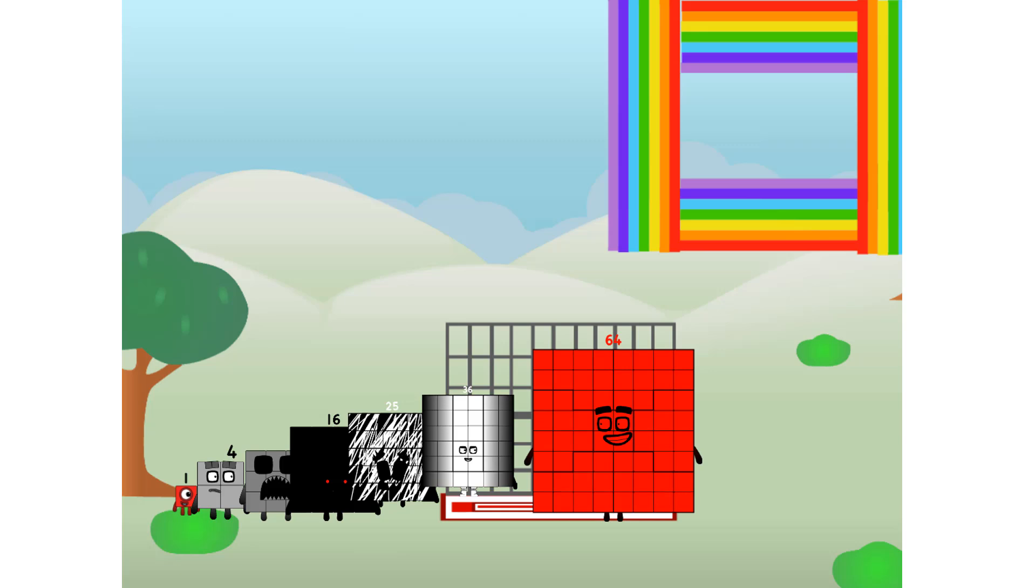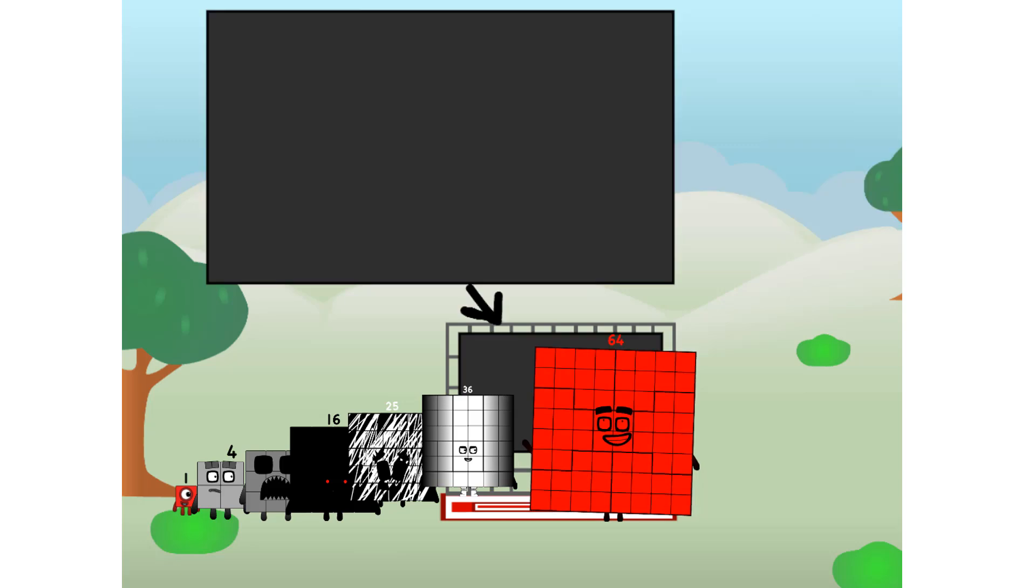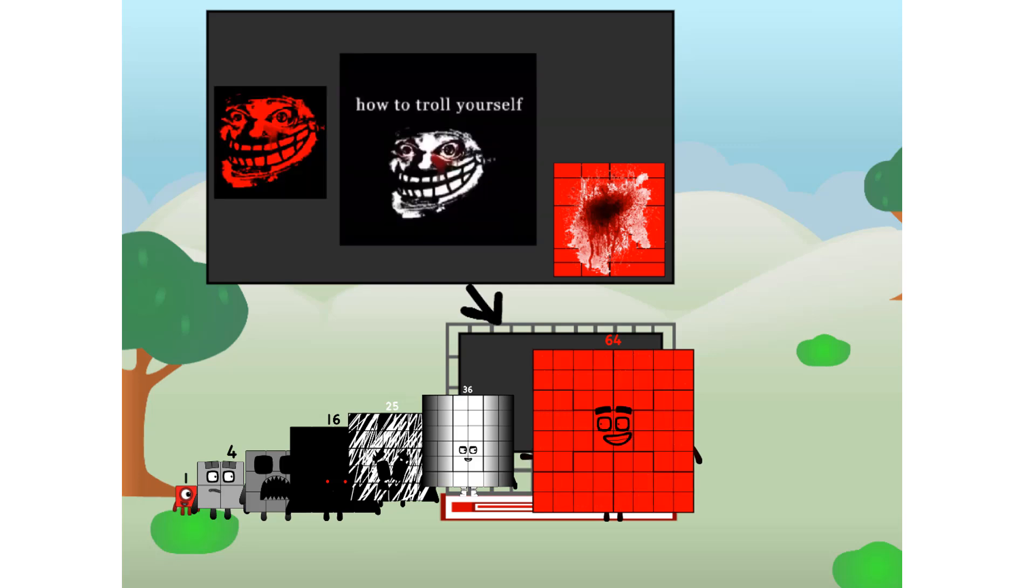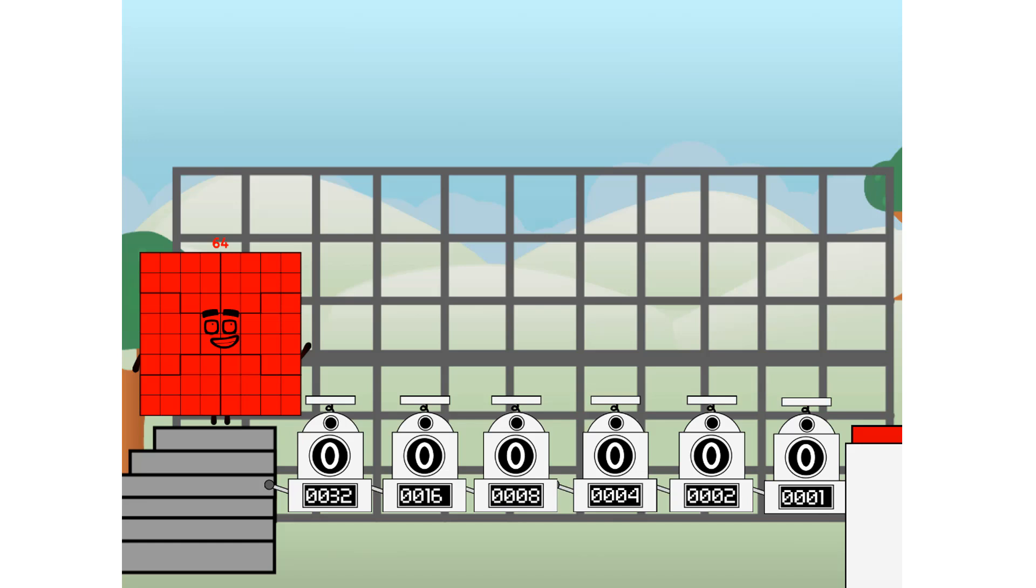There you are. This way. I've got so much to show you. I am 64, and I can be a strong square, a chess board, a phase image, origin image, a troll face. But today, I want to show you a little trick I call binary boosters, using the power of doubles to send any number flying.